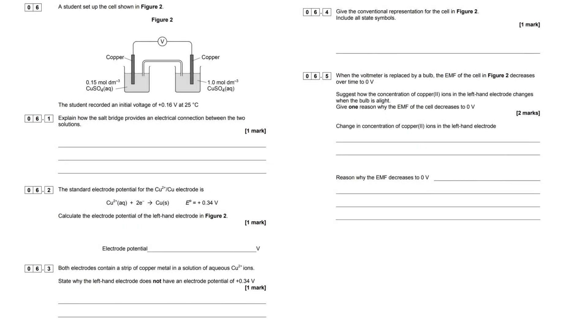In this video we're going to be looking at an electro-potentials set of questions, question 6, from Paper 1, June 2018 for the AQA exam board. As always, there's a ton of crossover between exam boards, but I'm going to focus on this one specifically for AQA.